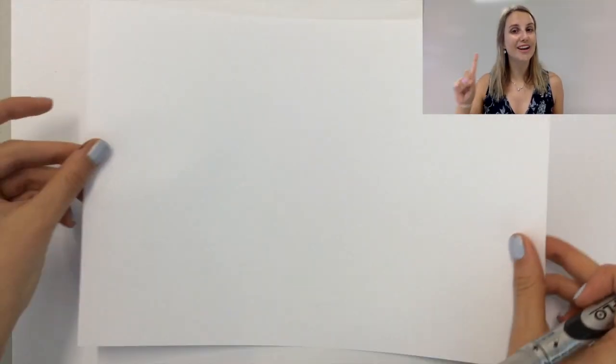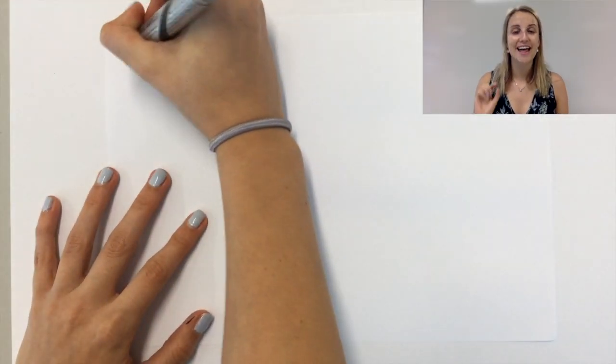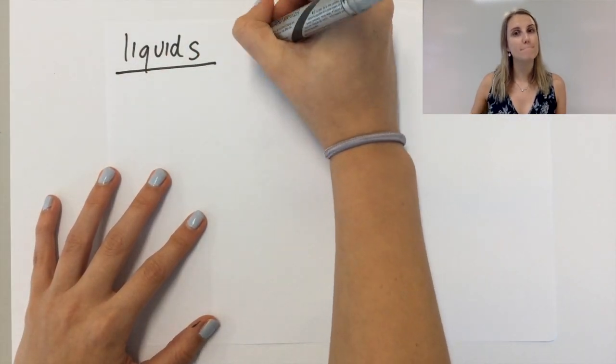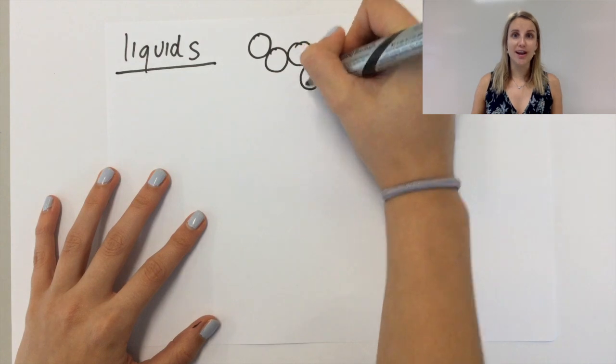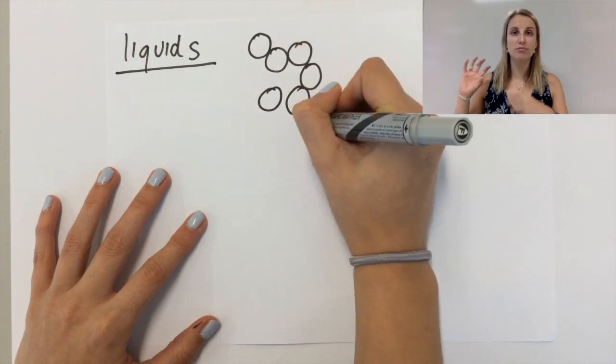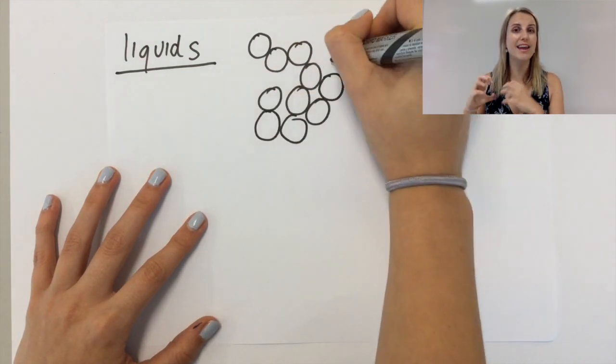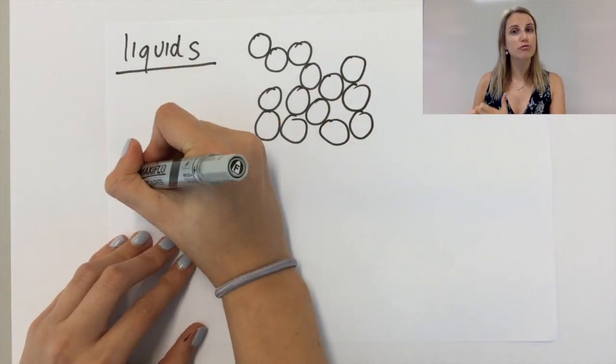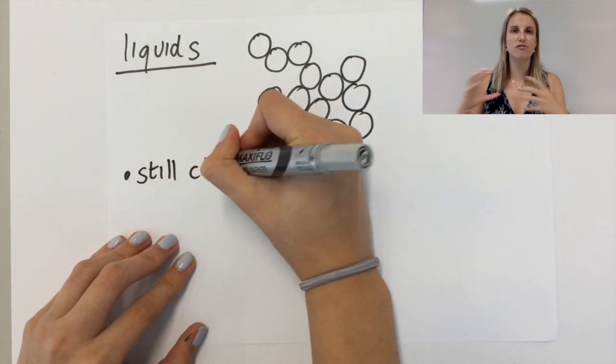If you pay attention to one thing then it should be this. The liquid particle diagram is the one that students get wrong most often. So liquid particles are arranged so that they're still really close together like the solid, but instead of being in rows they are arranged irregularly.